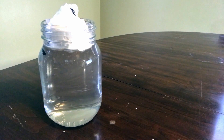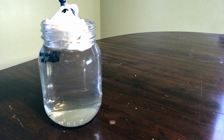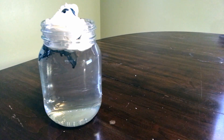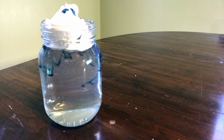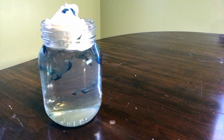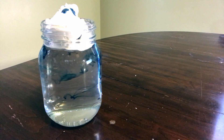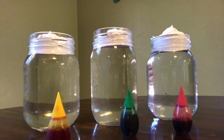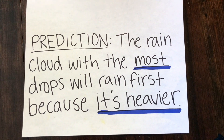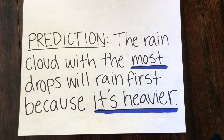The food coloring represents rainwater forming in the cloud. Remember, as our rain droplets get heavier, gravity will eventually force the water to fall to Earth as raindrops. Can you count how long it will take for your raindrops to fall to the bottom of your cup? Now that we've mastered making rain clouds, let's practice making predictions and testing them. I have three rain cloud jars, and I'm going to add different amounts of food coloring to each jar. I predict that the rain cloud with the most drops will rain first because it's heavier.